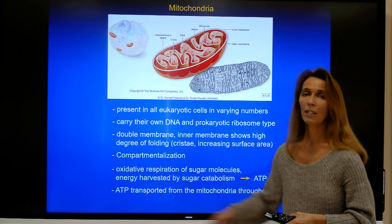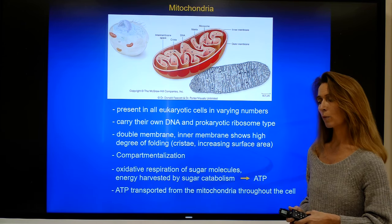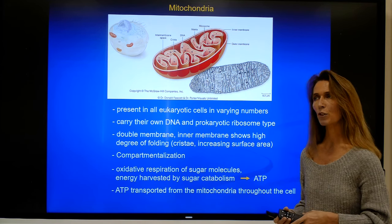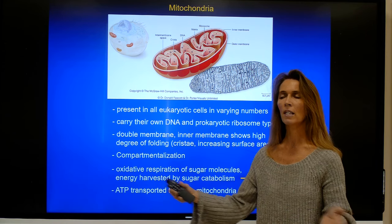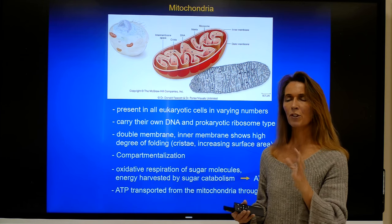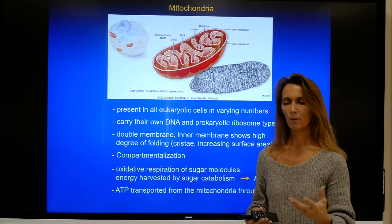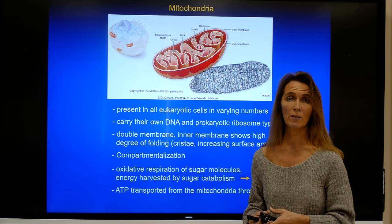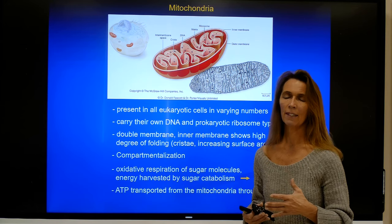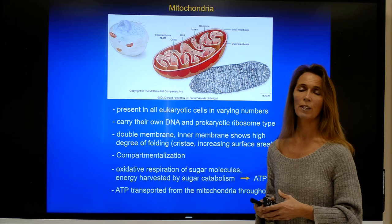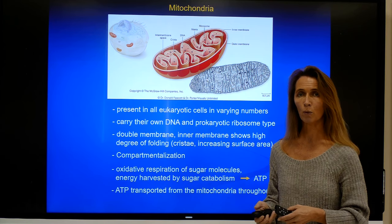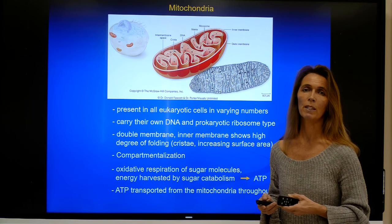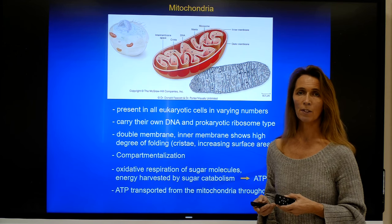The ATP produced by mitochondria is usually transported within the same cell, but not so much transported between different cells. There are some exceptions where ATP is actually released outside of cells, but this is more for signaling purposes — for example, ATP can be used as a neurotransmitter. Again, this is not so much for the utilization of the energy in ATP, but more as a signaling molecule. Usually, the energy from ATP is used within the cell in which it has been synthesized.